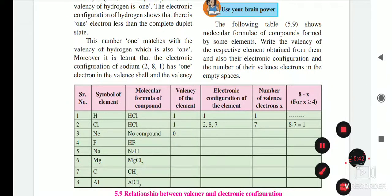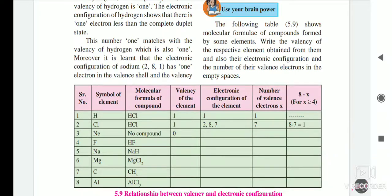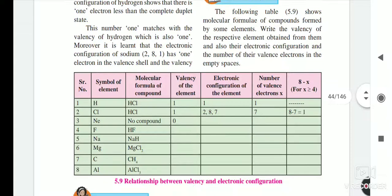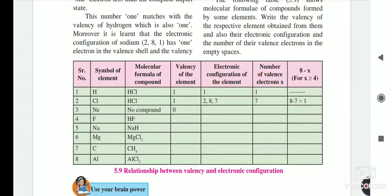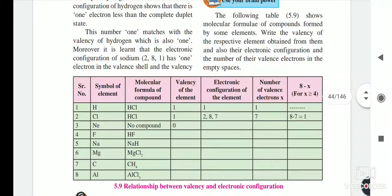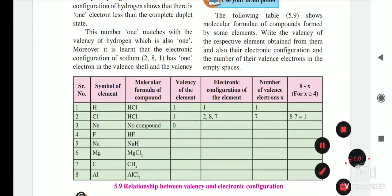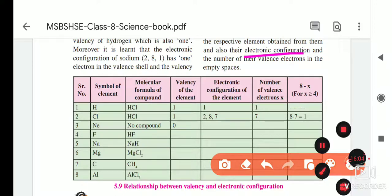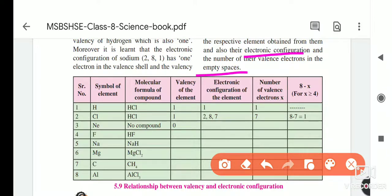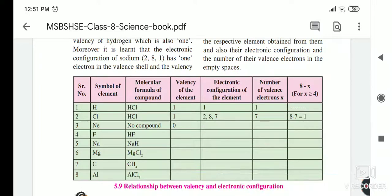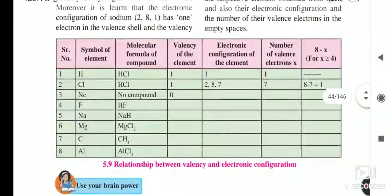Now there is a 'Use Your Brain Powers' question: the following table shows the molecular formulae of compounds formed by some elements. Write the valency of the respective element, their electronic configuration, and the number of valence electrons in the empty spaces.